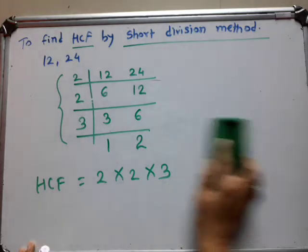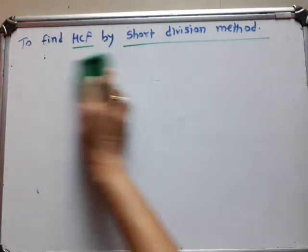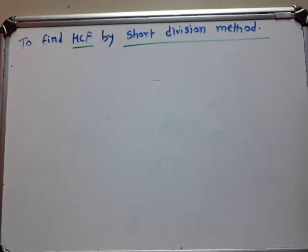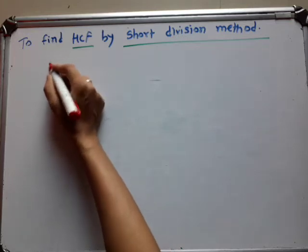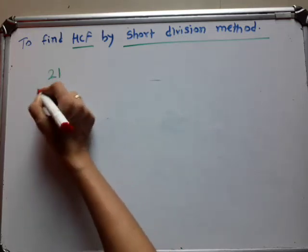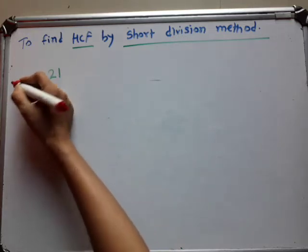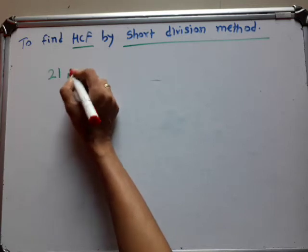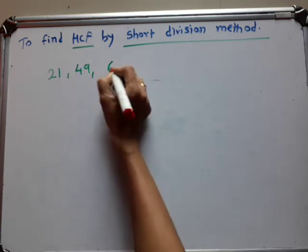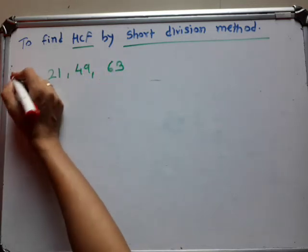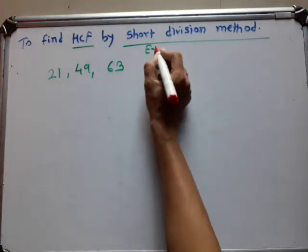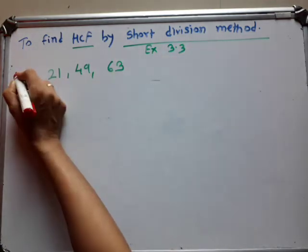Suppose we take one more example. Suppose we take a 3-digit number — 21, then 49, and 63. This example is from exercise 3.3, question number F.